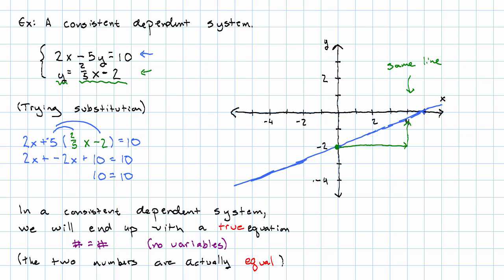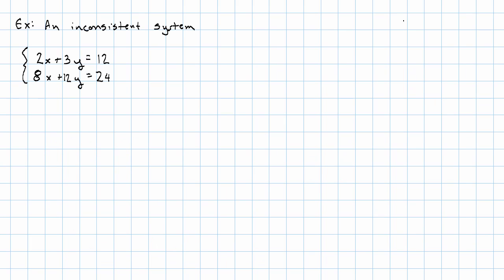Okay, let's try an inconsistent system. So, here's a system: 2x plus 3y is 12, 8x plus 12y is 24.